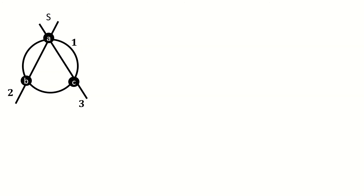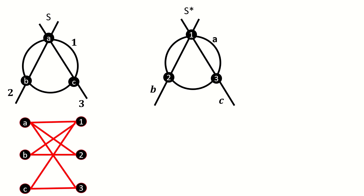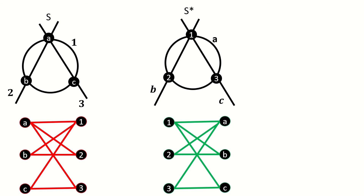As an example, here is an incidence structure that is self-dual. Here is its incidence graph, and here is the incidence graph of the dual. Notice the automorphism that exists in the incidence graph of the original, which we could define by the reflection about the central axis of the pictorial representation of this incidence graph.